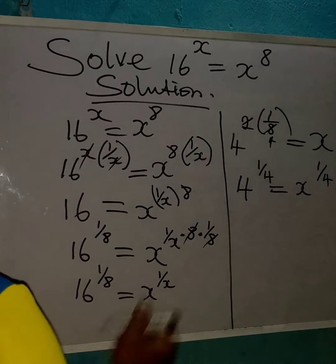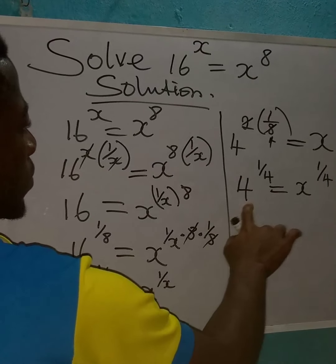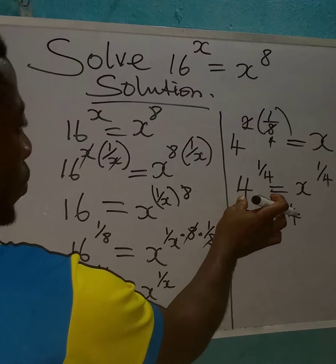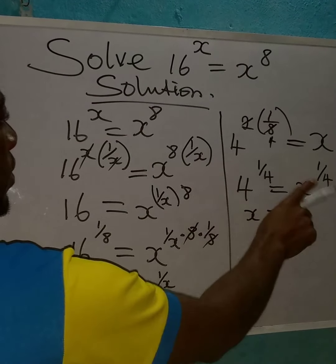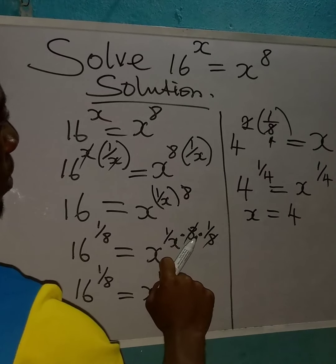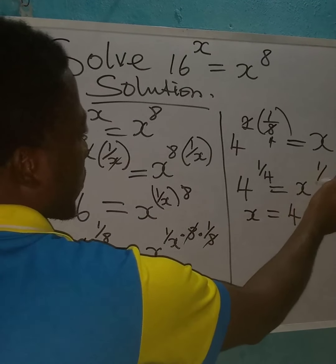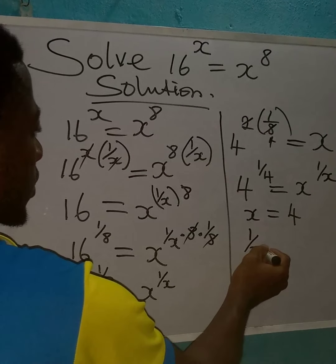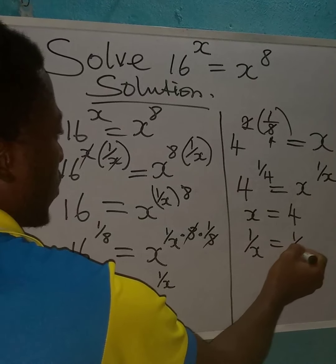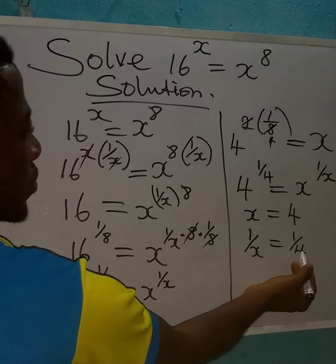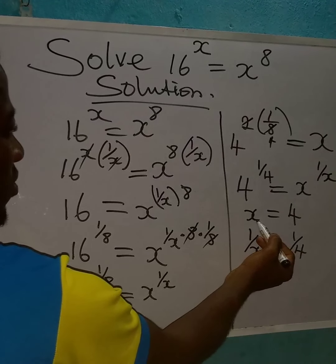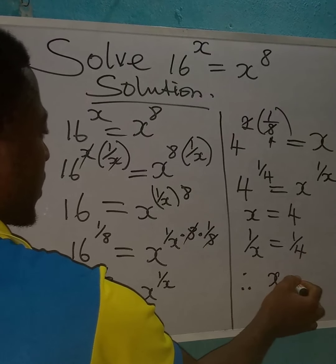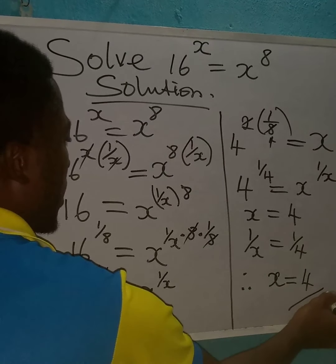From what we have now we can make a deduction. If we equate the bases, we get x equal to 4. If we equate the powers, we get 1 over x equal to 1 over 4, which also means x is equal to 4. From both the bases and the powers, x is equal to 4.